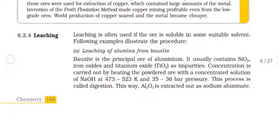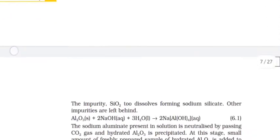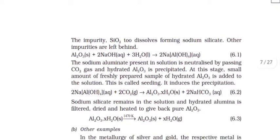Leaching of aluminum from bauxite. Bauxite is the principal ore of aluminum. It usually contains SiO2, iron oxides, and titanium oxides as impurities. Concentration is carried out by heating the powdered ore with concentrated solution of NaOH at 473 to 523 Kelvin and 35 to 36 bar pressure. This process is called digestion. This way, aluminum oxide is extracted as sodium aluminate.